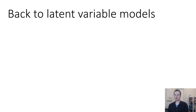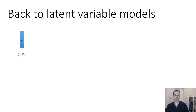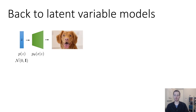Let's briefly rewind back to latent variable models. In a latent variable model you have some latent variable z — a vector of random numbers sampled from some distribution p of z that you choose. For instance, you might say that your latent variable has 256 dimensions, each sampled from a normal distribution with mean 0 and variance 1. It's not anything intelligent; we just pick some random distribution. Then we have a neural network that represents the distribution over x given z, or a deterministic mapping from z to x like we saw with normalizing flows, taking those random vectors and using them to produce a corresponding image.